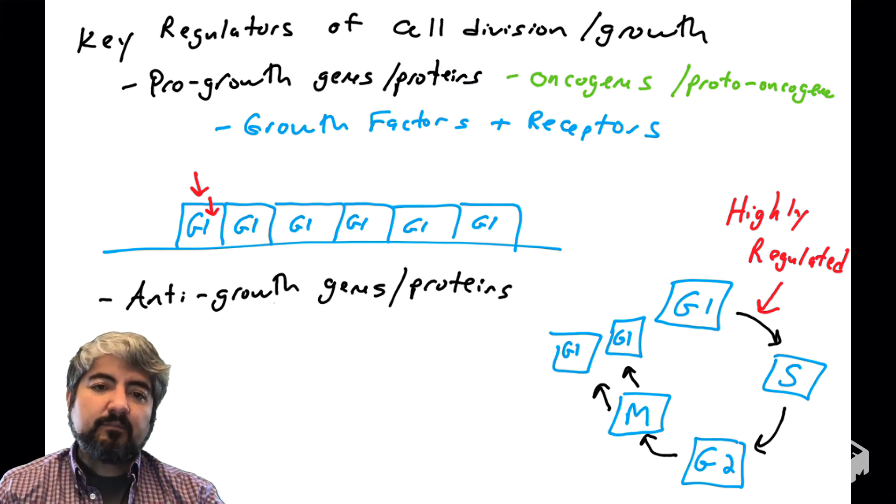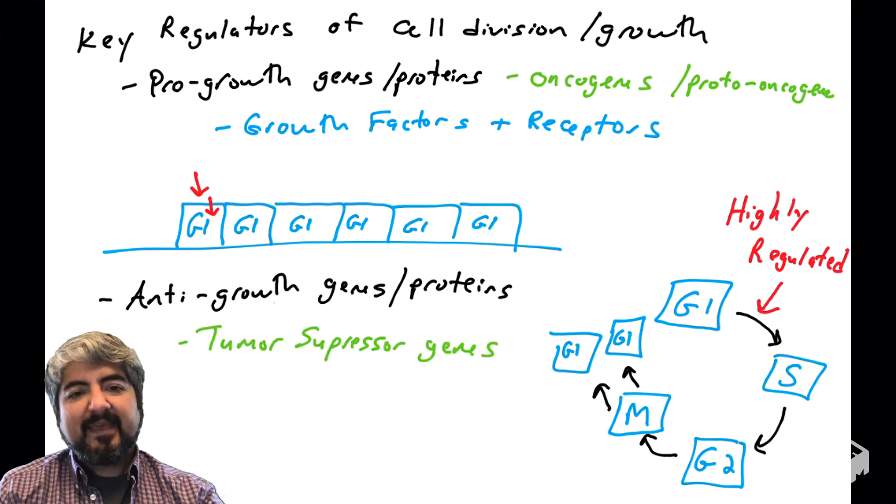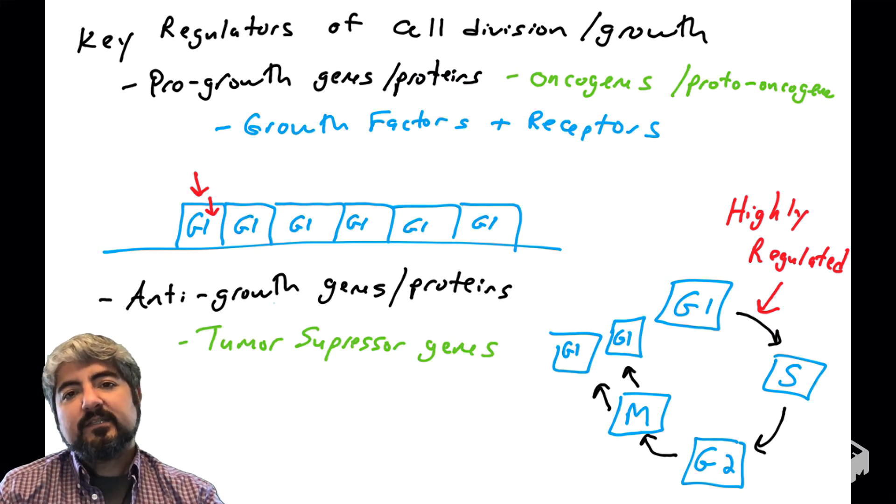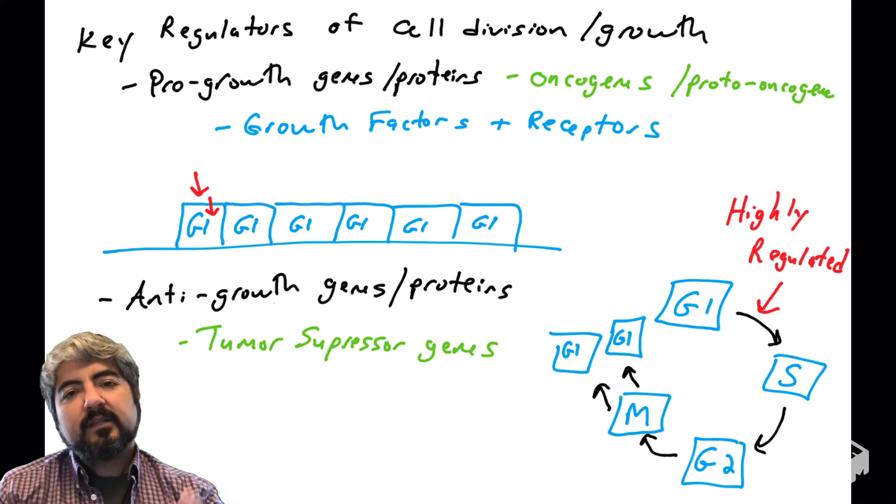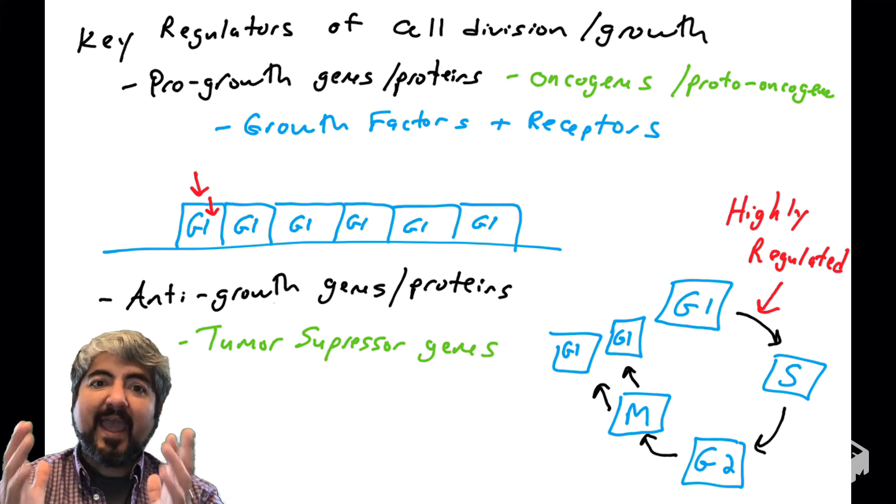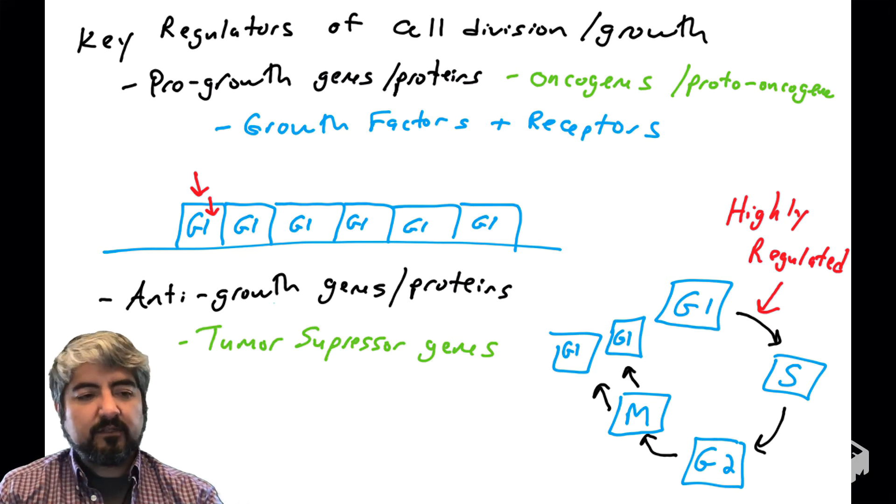There's a whole class of genes and proteins that prevent movement through the cell cycle. So you would say these are anti-growth genes that make anti-growth proteins, and people most commonly know these as tumor suppressor genes. So they stop movement through the cell cycle. And we're going to learn many genes that make proteins that, when they are active, they prevent movement through the cell cycle, prevent cellular division.